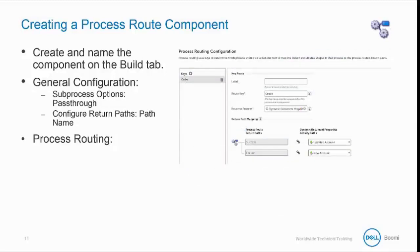On the Process Routing tab, add keys to define one or more unique route keys to be used at runtime as the basis for determining which subprocess to call. AtomSphere will populate the route key field with a default key name. If you specify your own key name, AtomSphere will validate as you type. The keys that you specify should correspond to the route parameters you defined in a process route shape. Each key must be unique within the process route component.